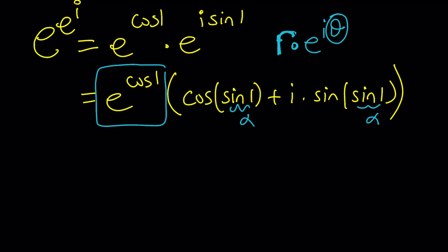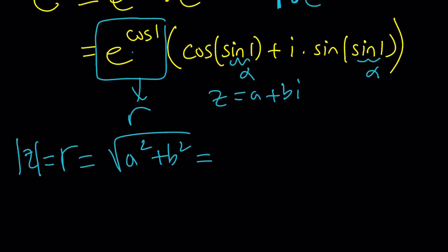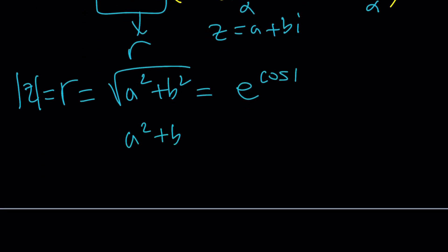What do you mean this is the modulus? That's not the answer. Well, it's just r. But r is the square root of a squared plus b squared. If z is a plus bi, then the absolute value of z is just going to be the square root of a squared plus b squared, from Pythagorean theorem, right? By definition. So, we're just going to take that expression and square both sides, because we're trying to find a squared plus b squared. And it's going to be e to the power 2 cosine 1 as before.